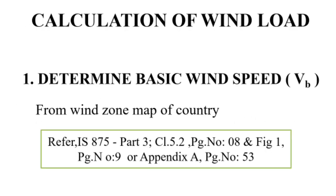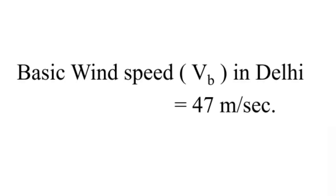Next, we calculate the wind load. First, we need to know the wind speed at Delhi. Refer to IS-875 Part 3, Figure 1 or Appendix A. The basic wind speed at Delhi, VB, equals 47 meters per second.